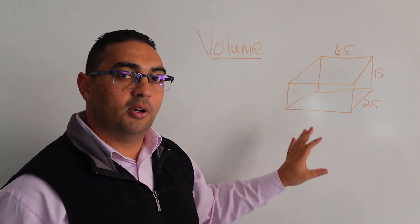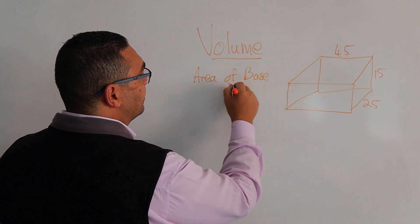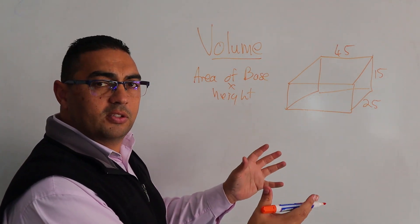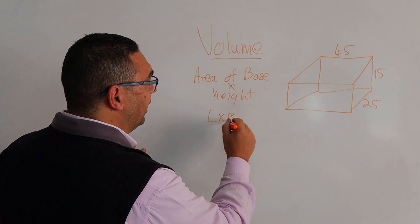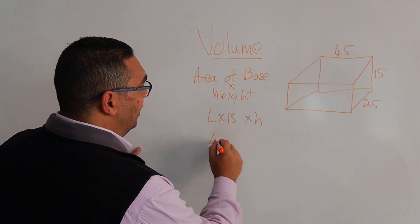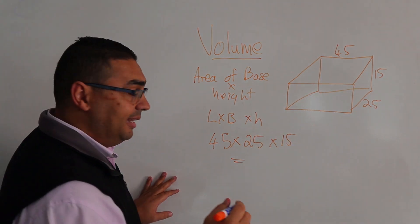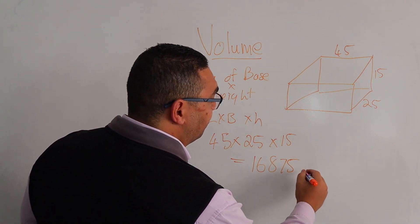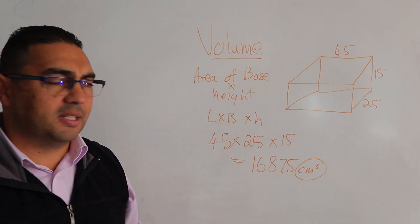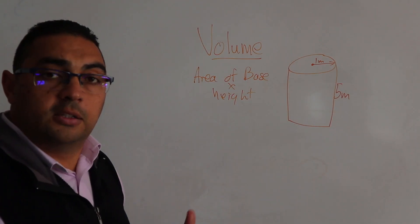We're looking at the volume of this box. The formula is area of base times height. For this shape, the area of the base is length multiplied by breadth, and then we multiply that by the height. Applying those measurements — length times breadth times height — gives us around 16,875 cubic centimeters. We use cubic centimeters because these measurements were in centimeters.